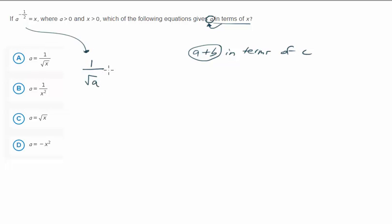So just testing your rules of exponents here equals x. Remember, we want to solve this and isolate a. So how do we get rid of this radical sign? Well, we can square both sides.